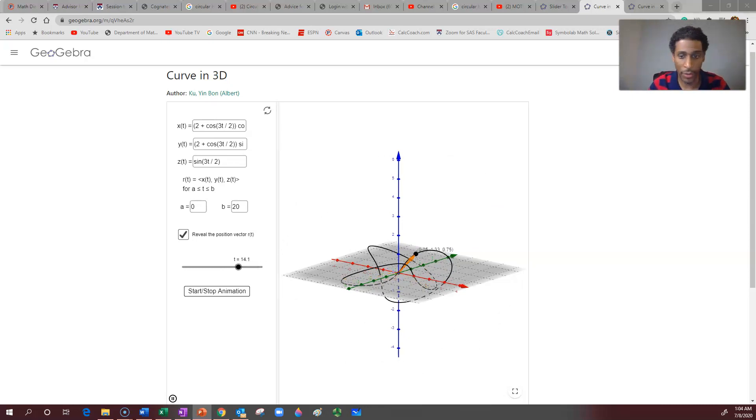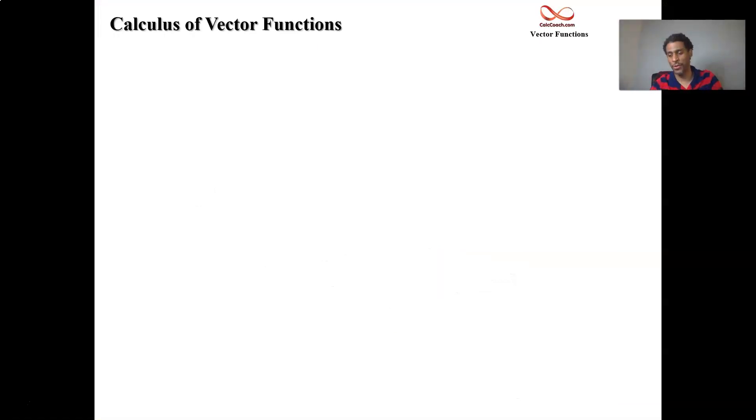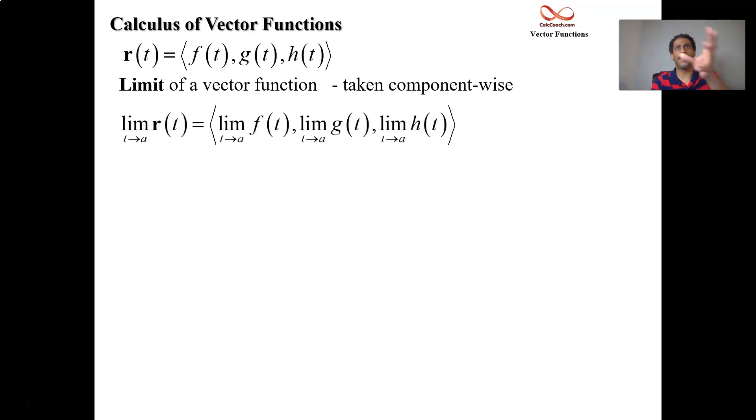Next up, what are we going to do with these functions? Well in calculus we do limits, we do derivatives, and we do integrals. Let's take the limit first. So you're traveling through time along the curve and you're worried about what happens as t goes to a certain value. The limit is going to be component-wise: limit in i, limit in the j function, limit in the k. Three little calc 1 problems.